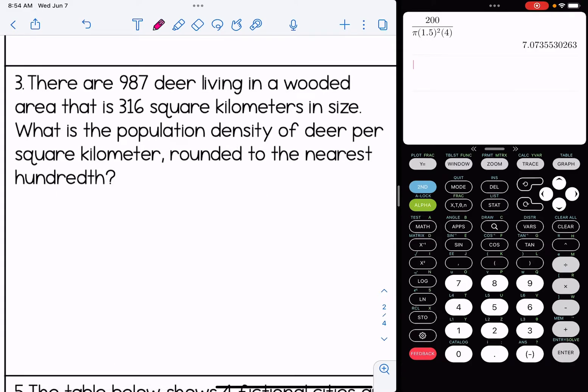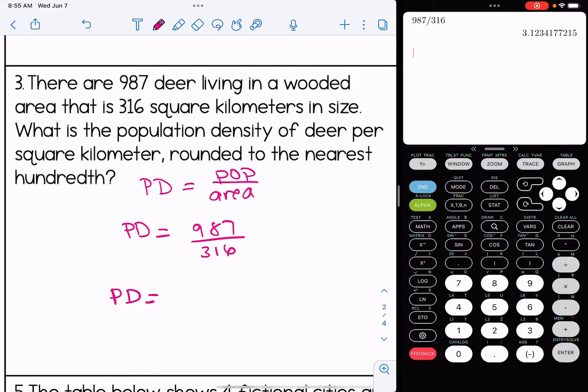Number three: there are 987 deer living in a wooded area that is 316 square kilometers in size. What is the population density of deer per square kilometer rounded to the nearest hundredth? So clearly population density. The formula is population over area. I just have some substitution to do. The population is how many of whatever we're talking about are present, so in this case, how many deer? 987. The area is 316. I'm going to type this into my calculator and round to the nearest hundredth. I got that the population density is 3.12. Let's think about what our units are going to be. It actually tells us in the problem: deer per square kilometer.